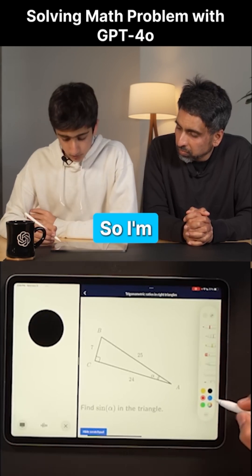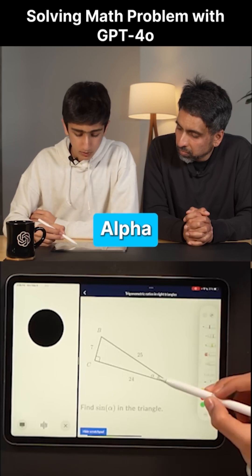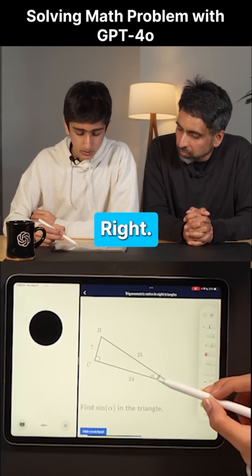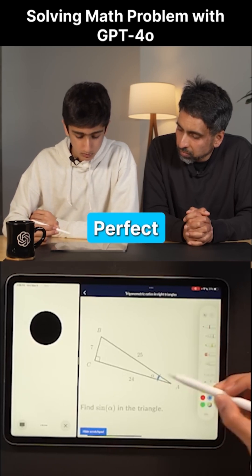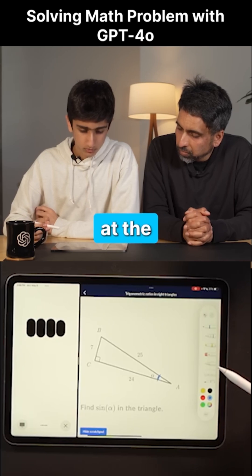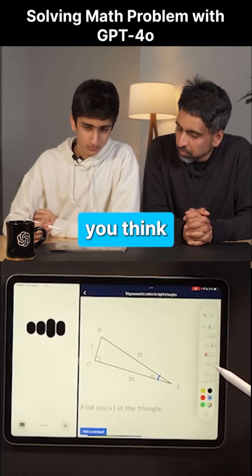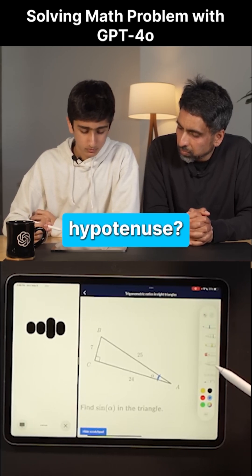All right, so I'm pretty sure this is the angle alpha right here, right? Correct. Now, looking at the triangle, which side do you think is the hypotenuse?